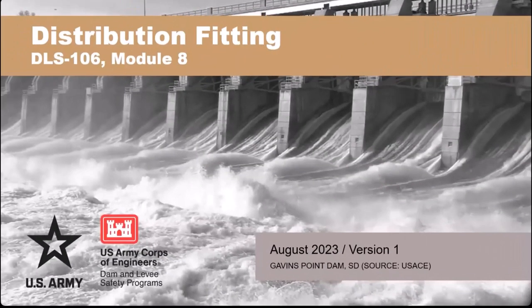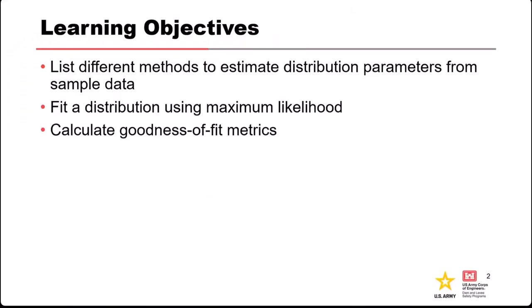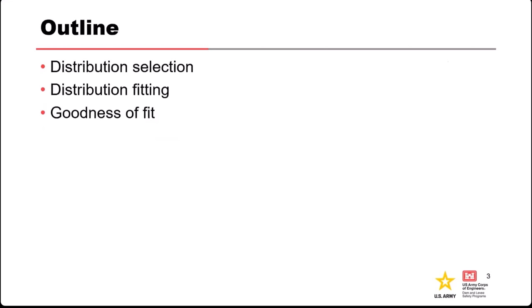The idea behind this lecture is: given some data, how do I estimate a parametric distribution for it? We'll cover different fitting methods—not in detail, but for situational awareness that they exist with different uses, applications, and popularity. Then we'll talk more specifically about fitting a distribution using maximum likelihood estimation, and introduce metrics for testing how well the distribution fits the data, which you'll practice in the exercise. So we're talking about selecting distributions, fitting them, and assessing how good the fit is.